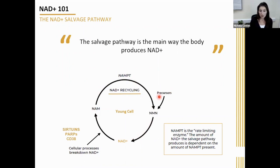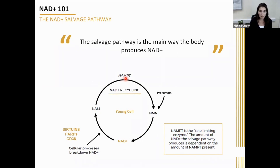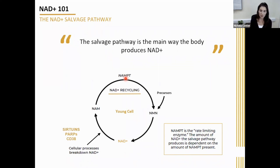It doesn't need any fresh precursor to come in from outside the system — it basically just gets recycled straight back into NAD. The important part in this pathway is an enzyme called NAMPT. This enzyme is really important because it's what we refer to as a rate-limiting enzyme, meaning its levels are directly linked to how much NAD is going to be produced. If the levels of this enzyme go down, NAD will not be produced as effectively.